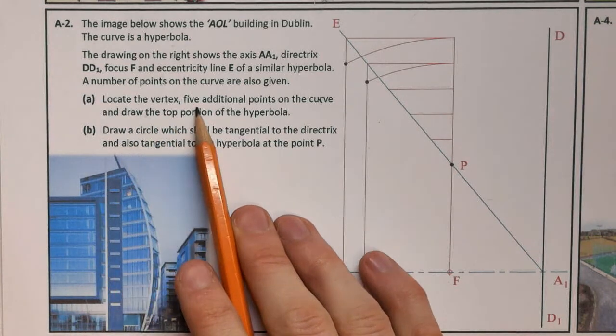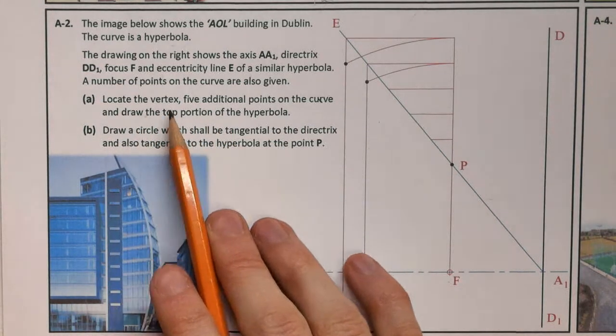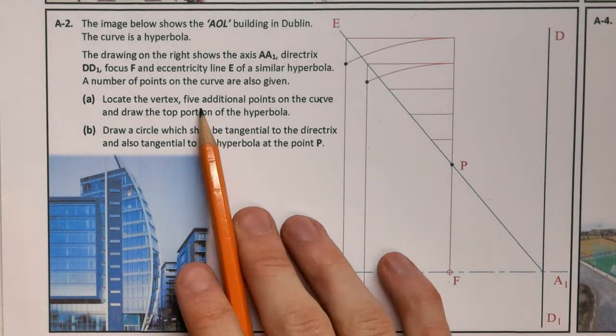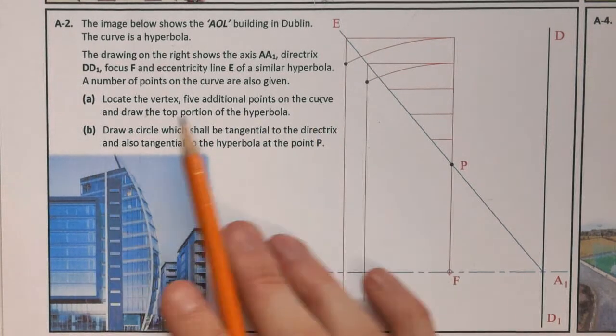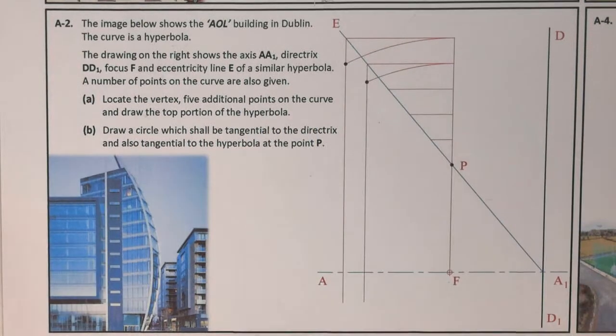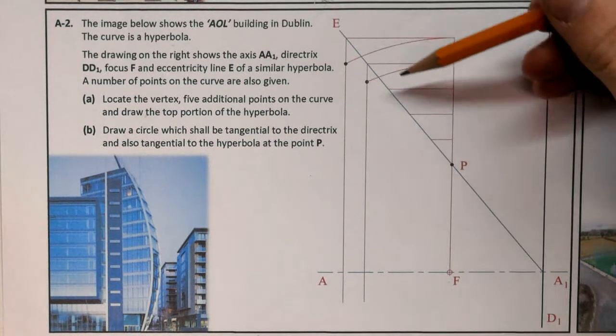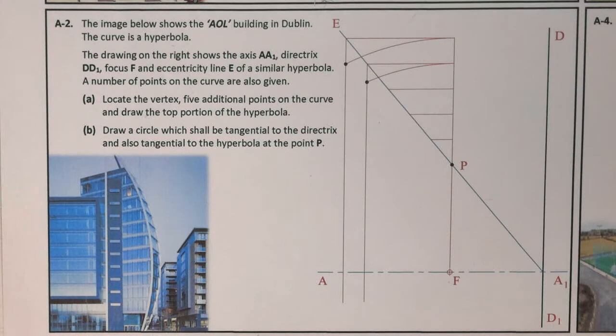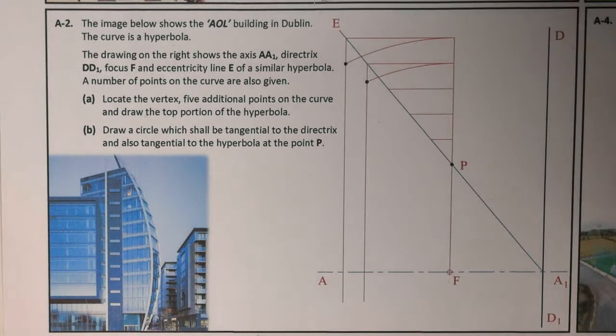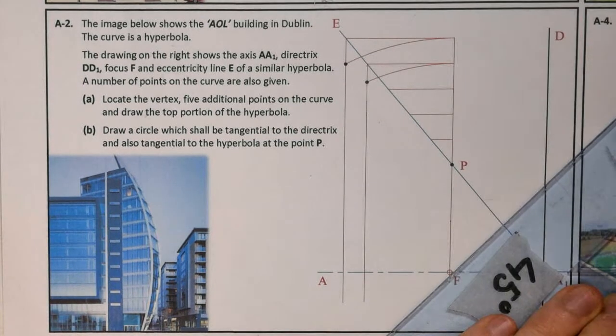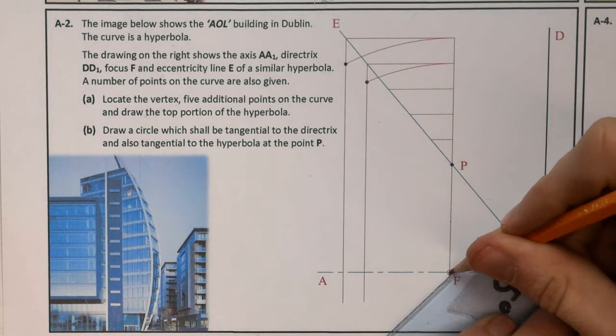Locate the vertex, which we still haven't got, five additional points on the curve, and draw the top portion of the hyperbola. Let's start off by finding our vertex.